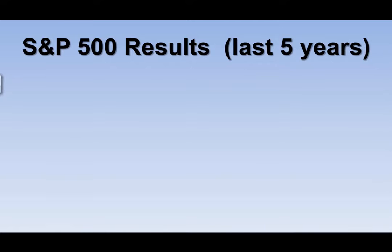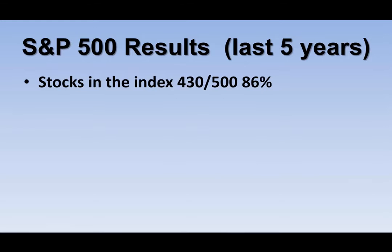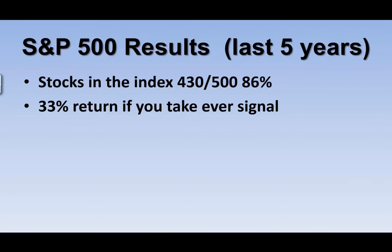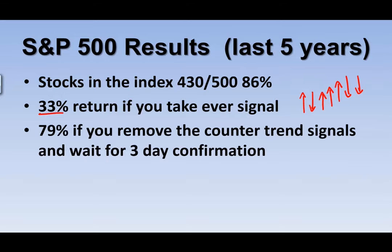Looking at the S&P 500 over the last five years, this indicator worked on 430 out of 500 stocks — an 86% success rate. If you took all the long and short signals, your return would have been 33%. But by filtering to stay on the side of the daily trend and using a three-bar confirmation, that increases your results from 33% to 79%. Super simple, easy way to filter out trades.